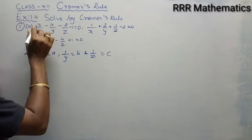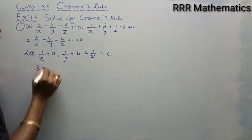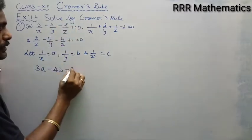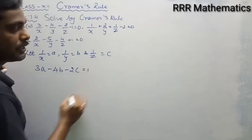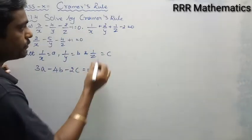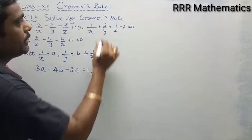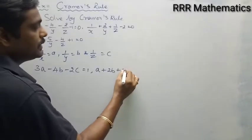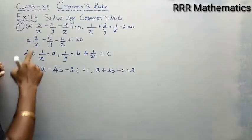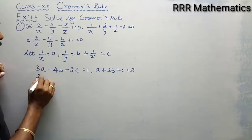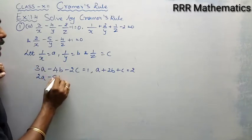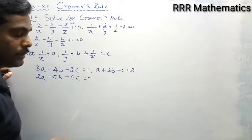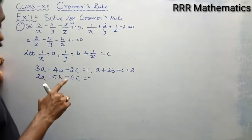Therefore, the given equations become: First equation: 3a minus 4b minus 2c plus 1 equals 0. Second equation: a plus 2b plus c minus 2 equals 0, which gives plus 2. Third equation: 2a minus 5b minus 4c minus 1 equals 0. Now we are getting linear equations in terms of a, b, c.